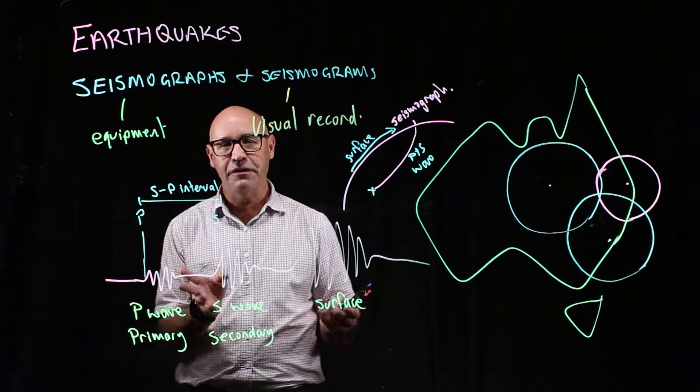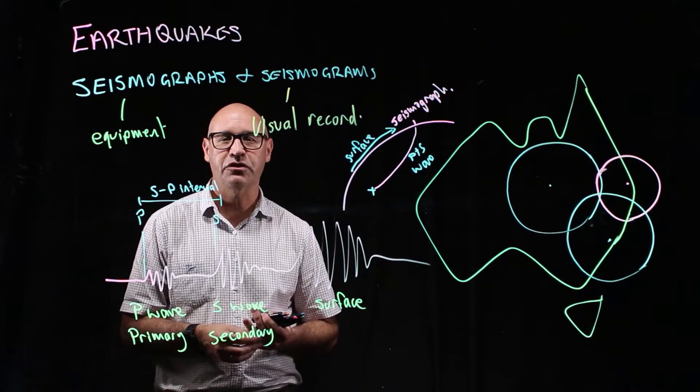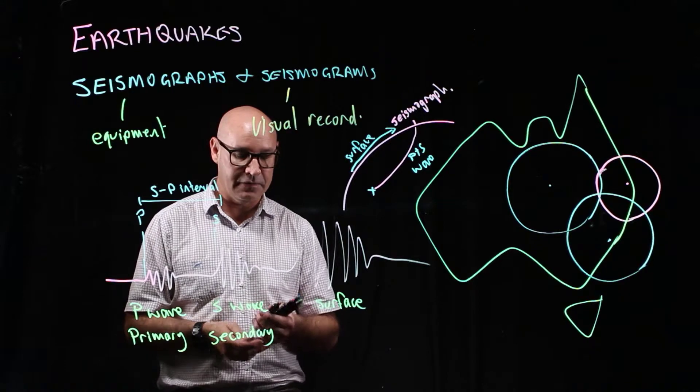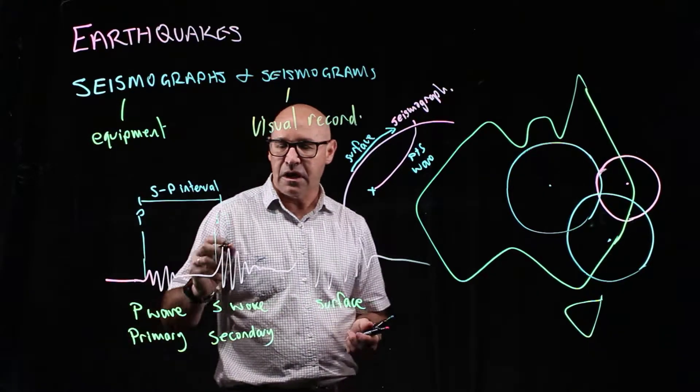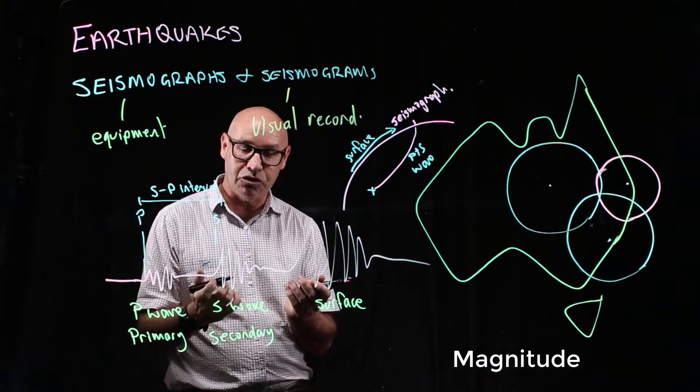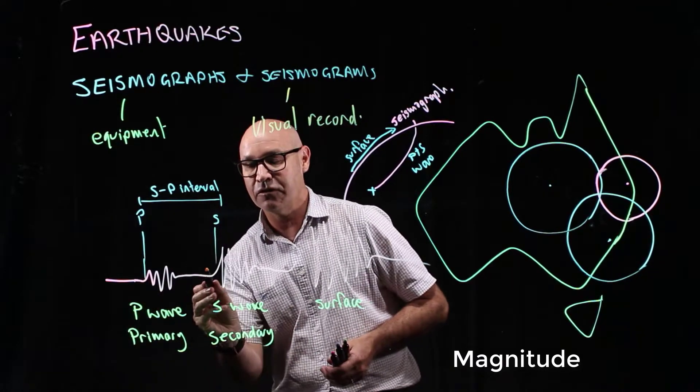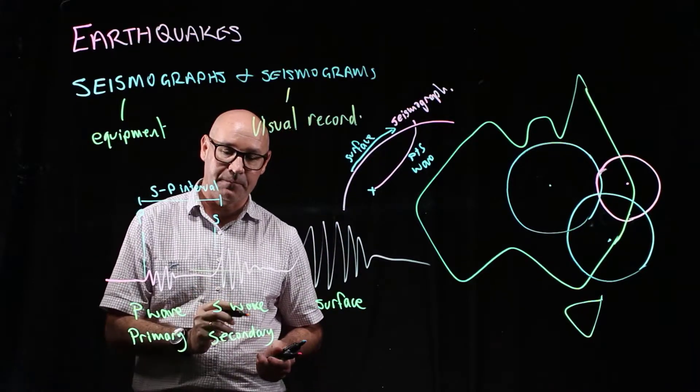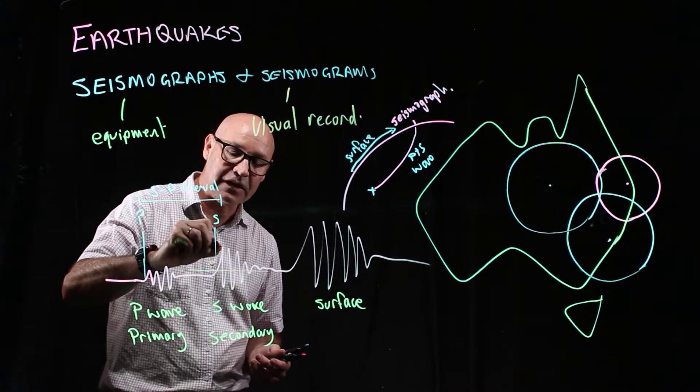There's also another thing that seismologists want to know, and that's the magnitude. How strong the earthquake is. So the magnitude is linked to amplitude. Amplitude is the distance from the midline that a wave deviates. So it's this distance here.